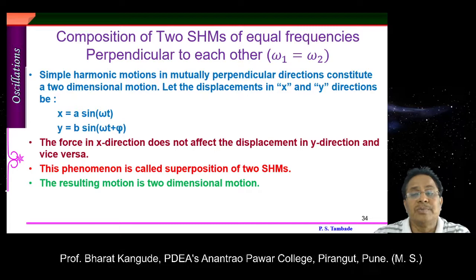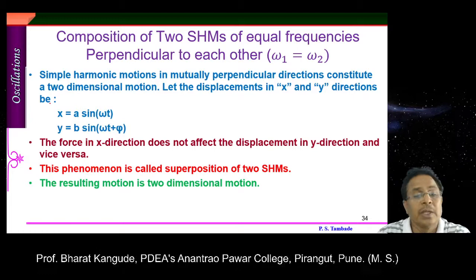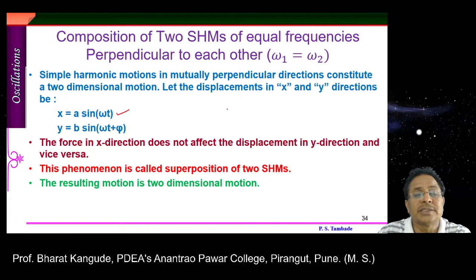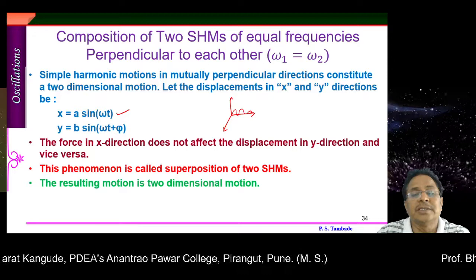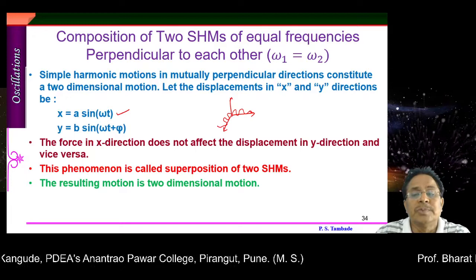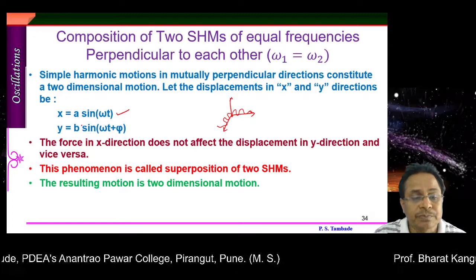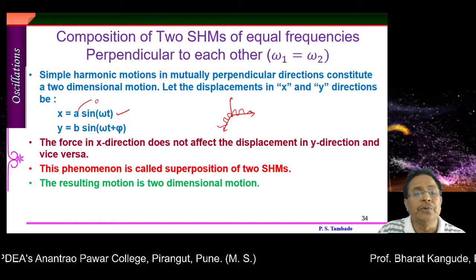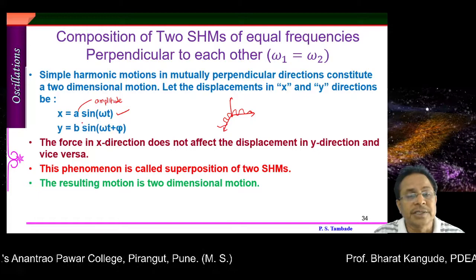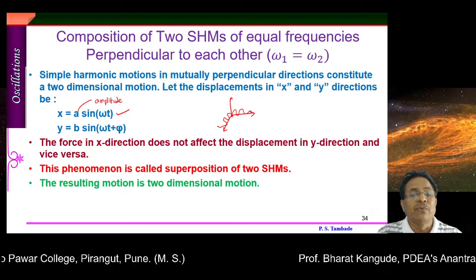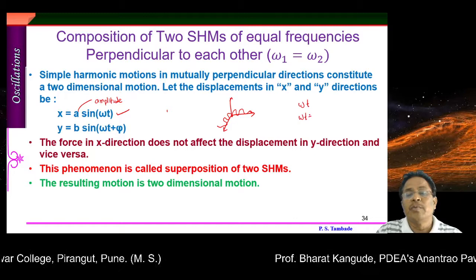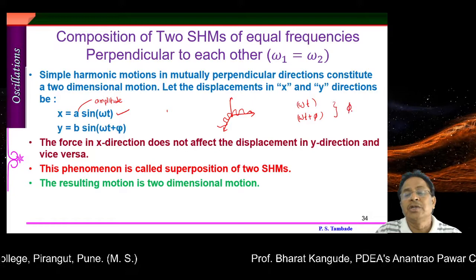These are the two SHMs. The first SHM is given as x = a sin(ωt), acting in the direction of the x-axis. The second SHM acting in the y direction is y = b sin(ωt + φ). In the first case the phase is ωt, in the second case the phase is ωt + φ. The phase difference between the two is φ, and b is the amplitude in the second case.